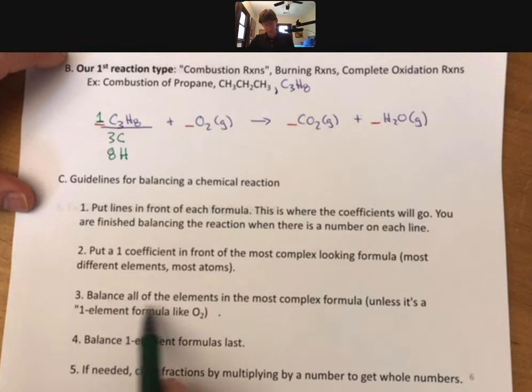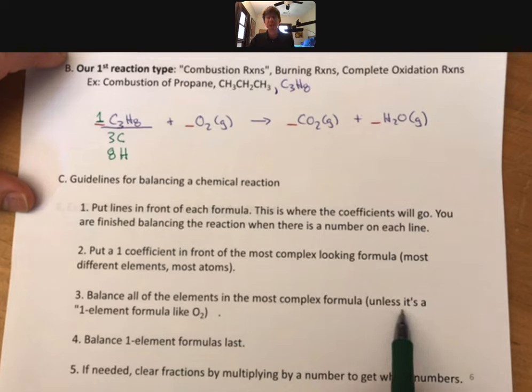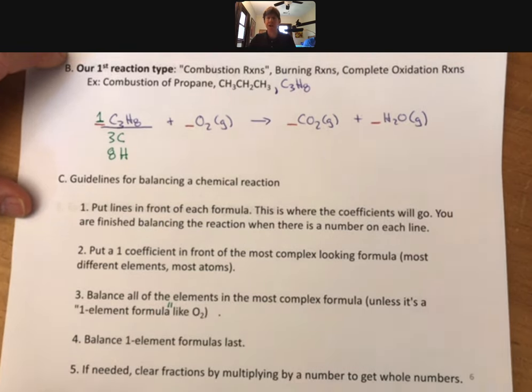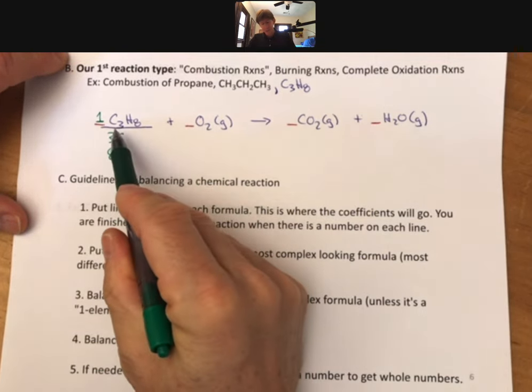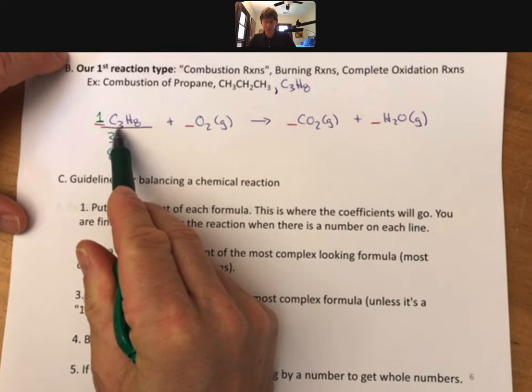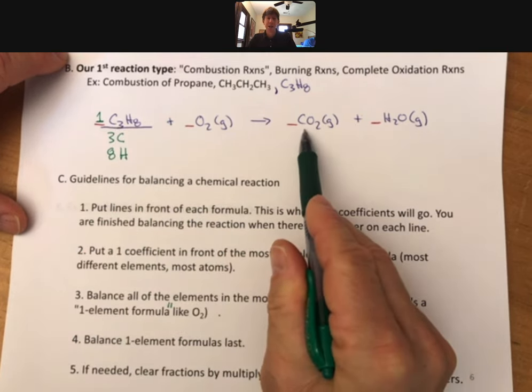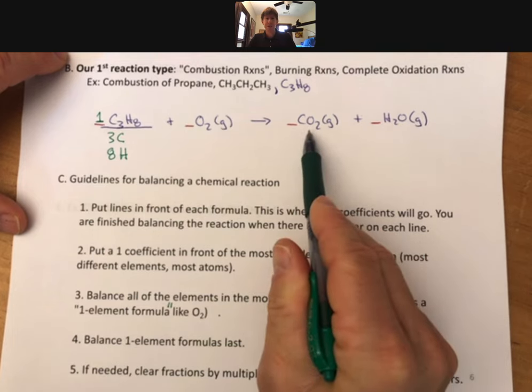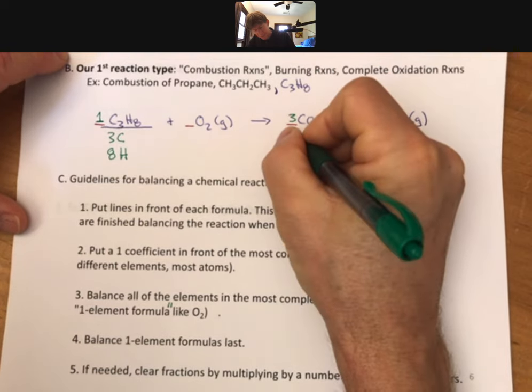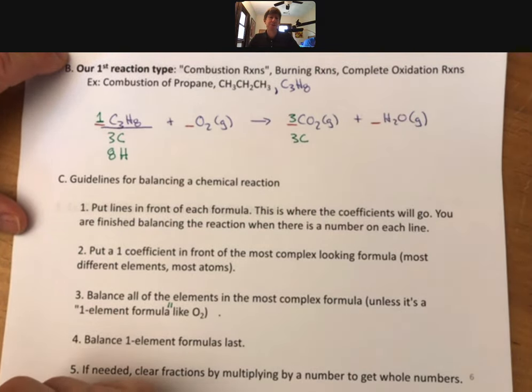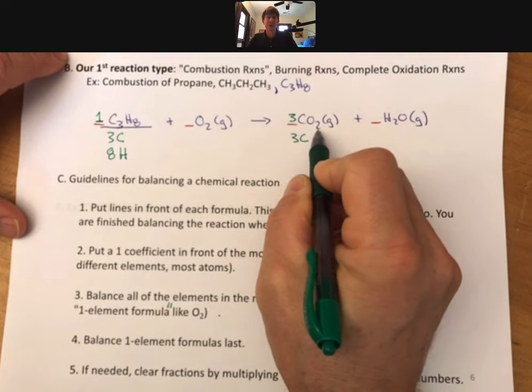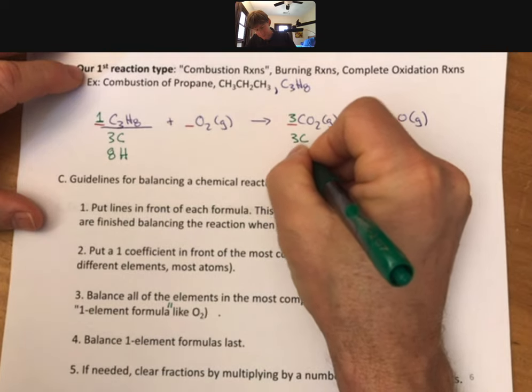Guideline number three says balance all the elements in the most complex formula unless it's a one element only formula, like oxygen. But since there's no oxygen in this first one we don't have to worry about it anyway. Typically if you balance left to right that's the best way to do. Here's C3. I have three carbons. That means there must be three carbons on the product side according to the law of conservation of mass. That means I must have a three here and that gives me three carbons and six oxygens, because three carbon dioxides times two oxygens is six.